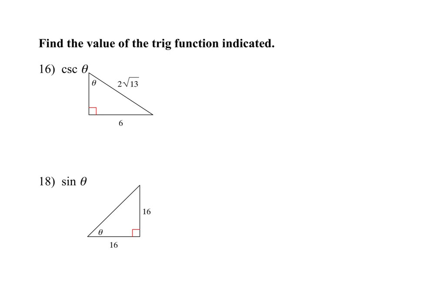This section is SOHCAHTOA — you should breeze through it. The only thing to pay attention to is labeling correctly in reference to the angle. Sometimes they give you everything you need: if omega has your opposite and hypotenuse and they want cosecant, that's the reciprocal of sine, which is hypotenuse over opposite. They gave you everything — just reduce it.